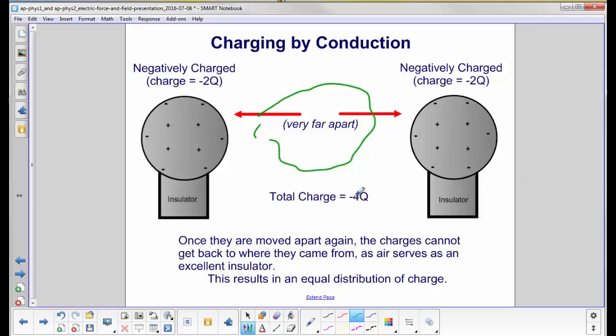So what charge do we have on each one? Well, we had an initial charge of negative 4q between the two spheres. So when we split that in half, we get negative 2q. So charge has been transferred from this sphere over to here. That's charging by conduction.